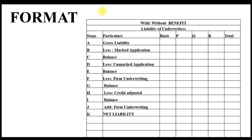The format is: first, gross liability; less marked application gives you balance; less unmarked application gives you balance; less firm underwriting gives you balance; less credit adjusted if any gives you balance; and lastly, add firm underwriting back. So there is one 'less firm underwriting' and then one 'add firm underwriting.' The final result is the net liability of the underwriters.